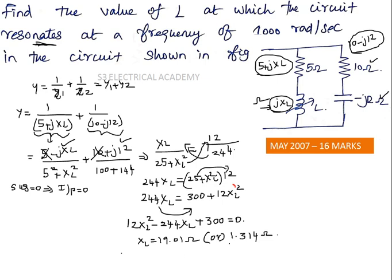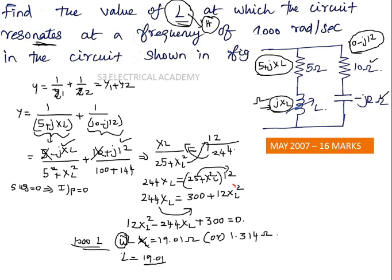We need the value of L (in henries), not XL. Since XL = ω·L and ω = 1000 rad/s, we have L = XL/1000. Therefore L = 19.01/1000 = 19.01 millihenry, or L = 1.314/1000 = 1.314 millihenry. Question number one is complete. We now move to question number two.